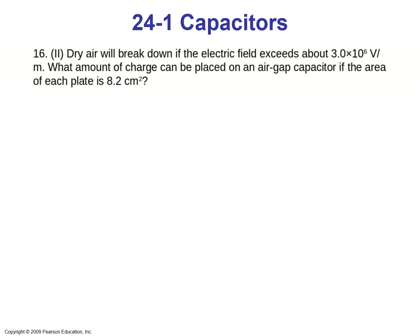Now let's look at problem number 16 from the book. Dry air will break down if the electric field exceeds about 3.0×10⁶ V/m. What amount of charge can be placed on an air-gap capacitor if the area of each plate is 8.2 cm²? We assume a uniform electric field between the capacitor plates.